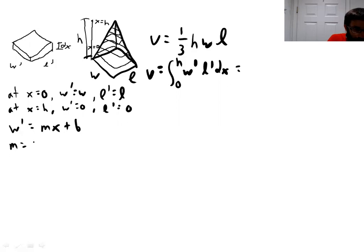Let's calculate our M. Well, that's going to be the change in rise over run, right? So the rise is delta W' and the run is x. And so that's going to be W minus 0 divided by 0 minus H. That's going to get us basically negative W over H is our M. That's our slope. So we're going to plug that in.